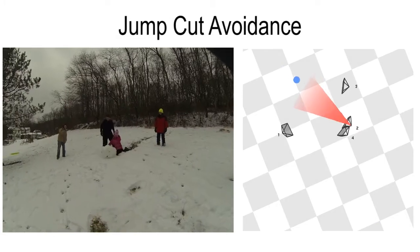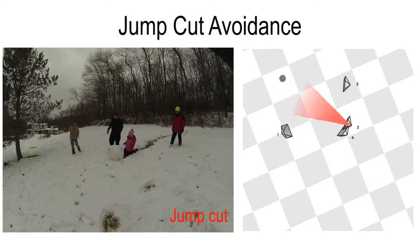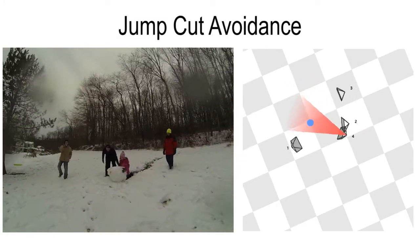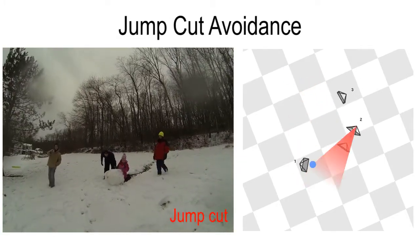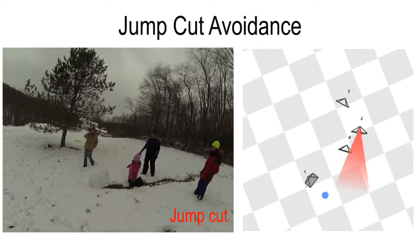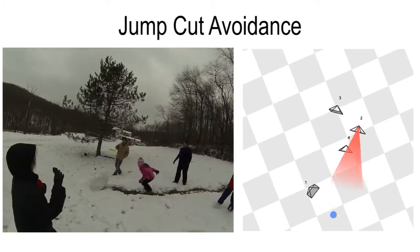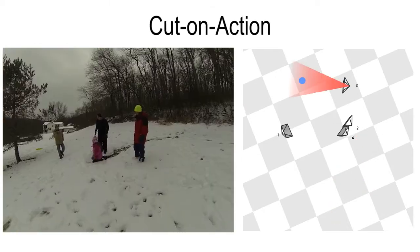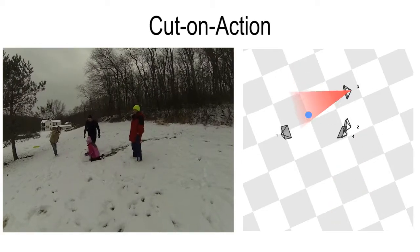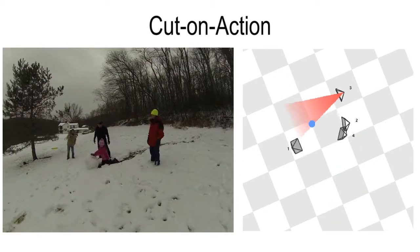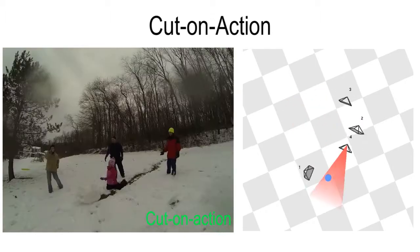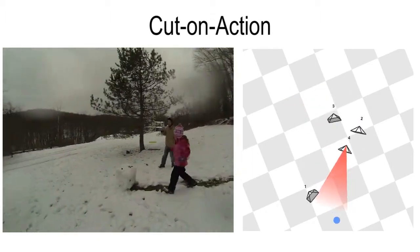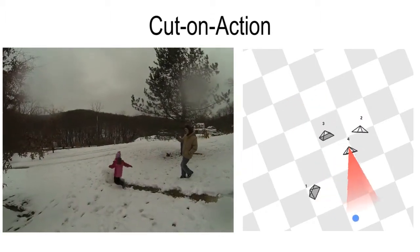A jump cut involves a cut between nearby cameras, resulting in the appearance of jerky camera motion rather than a cut between cameras. The cut-on-action condition produces the impression of continuity by cutting between cameras at moments of activity.